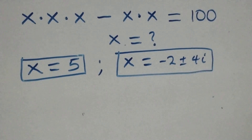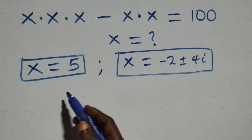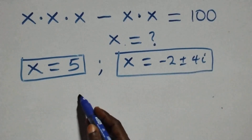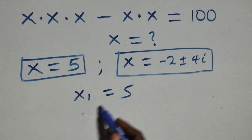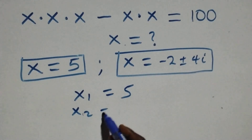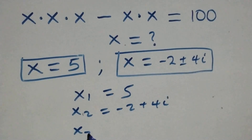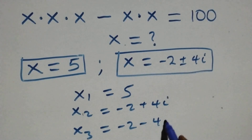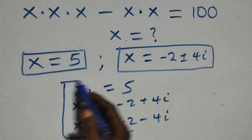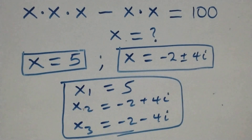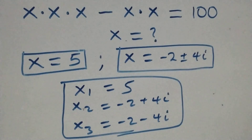Therefore here we have three solutions together: one real and two complex. x1 equals to 5, x2 equals to minus 2 plus 4i, and x3 equals to minus 2 minus 4i, making three solutions: one real and two complex. Thank you for watching, don't forget to subscribe for more videos, turn the notification bell, and share this video. Give a thumbs up, put your comments, see you next class, bye for now.